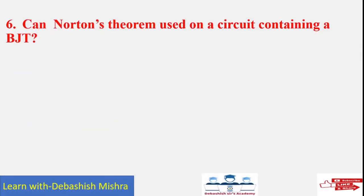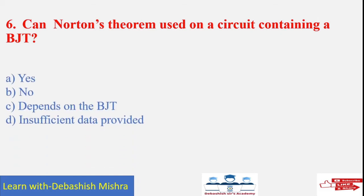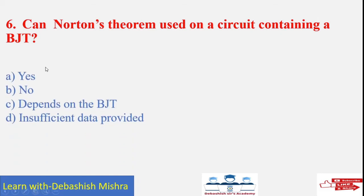Can Norton's theorem be used on a circuit containing a BJT — bipolar junction transistor? No, because BJT is a nonlinear device and Norton's theorem is applicable only for linear devices. As it is a nonlinear device, it cannot be used. So the answer is B: no.